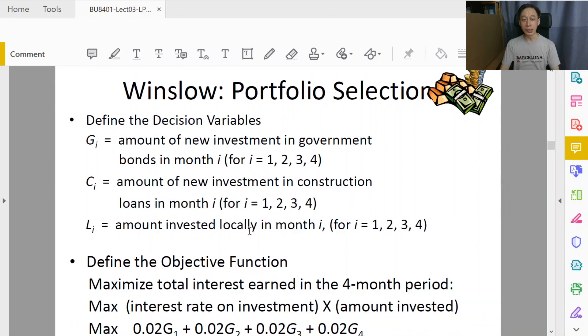Fair enough. Indeed we have 12 decision variables here. If you are new to this you need to be picking this notation up on G of i: G of 1, 2, 3, 4. So G1, G2, G3, G4, each representing the amount of investment at the start of the month.